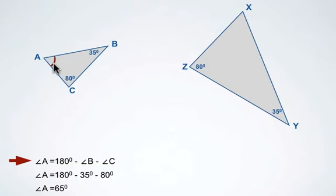Now, if these triangles are similar, angle X should be the same value. Let's have a look at angle X.